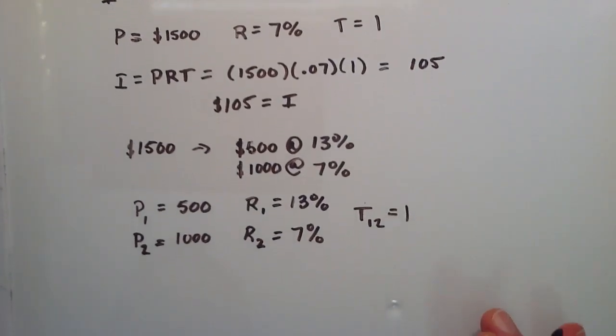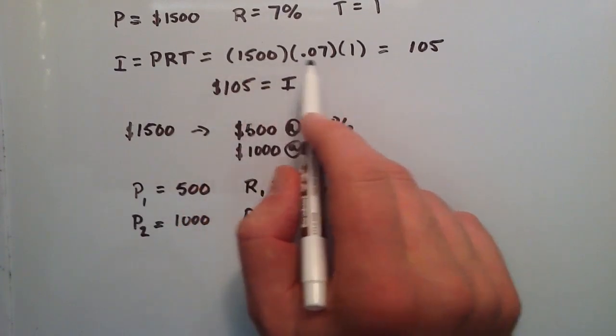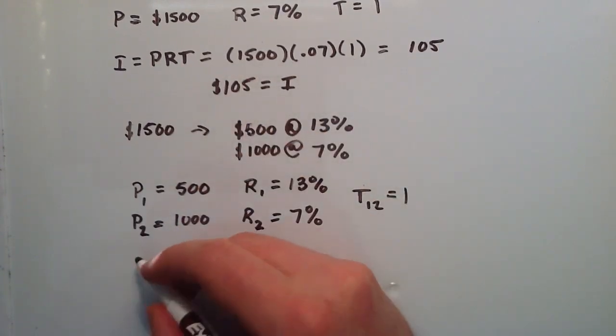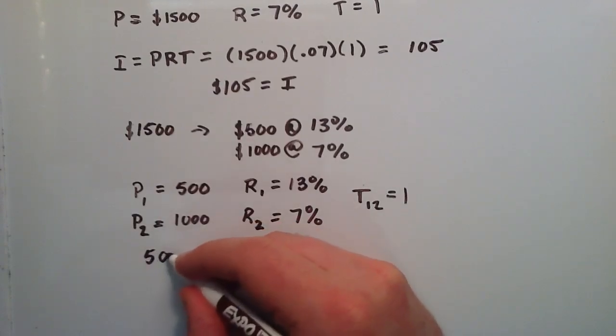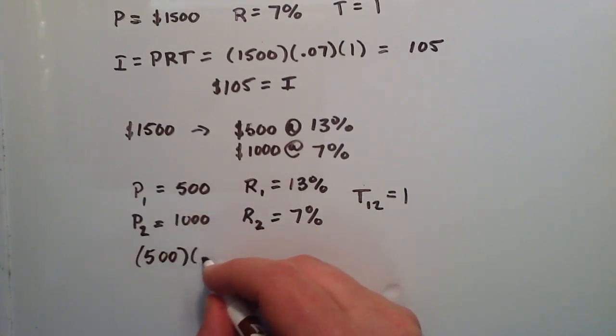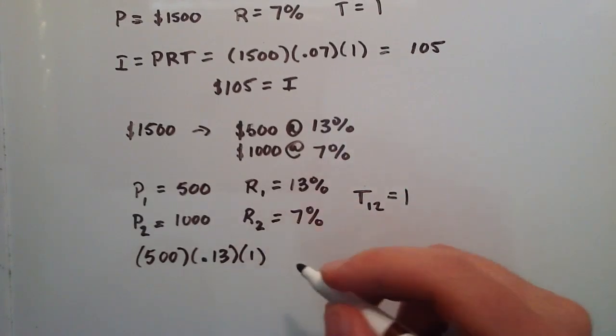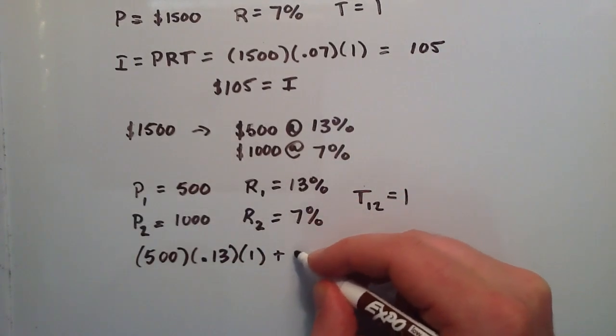So basically, what we're going to do is we're just going to set it up the same way, but we're just going to have two terms. We're going to make a certain amount of interest off of the first investment, and we'll find that by taking 500, which is our principal in the first case, multiply it by the rate, which is 0.13 for 13%, multiplied by one year.